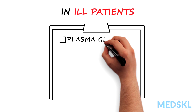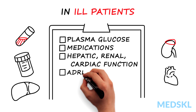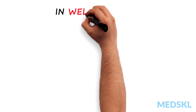In the ill patient, draw plasma glucose during symptoms of hypoglycemia, review medications, assess hepatic, renal, and cardiac function, and investigate for adrenal cortical insufficiency or non-islet cell tumor if suspected.